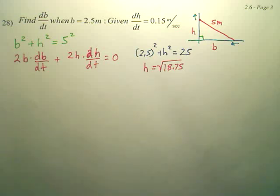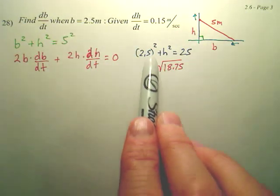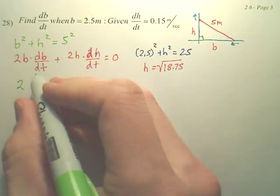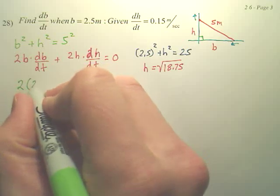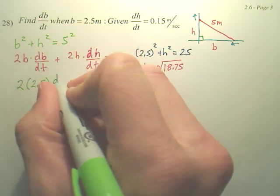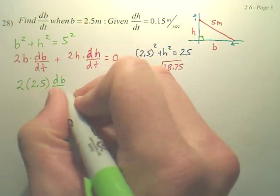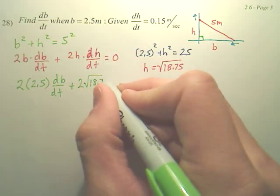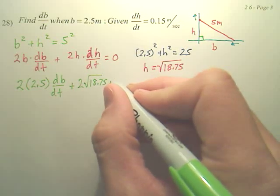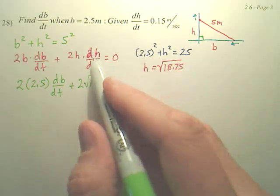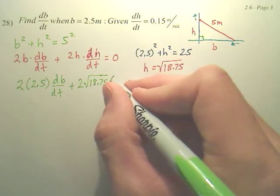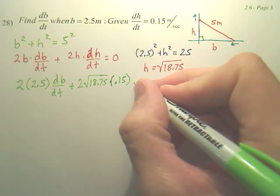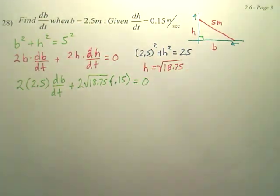Now, do I have everything I need? Yeah. I got b, I got h, I got dh/dt. I go and I plug them all in. So 2 times b, b is 2.5. I'm looking for db/dt. Plus I have h now. H is the square root of 18.75, and dh/dt we said was 0.15. And all of that equals 0.